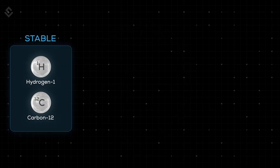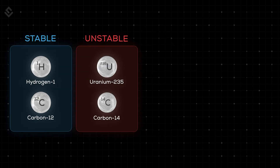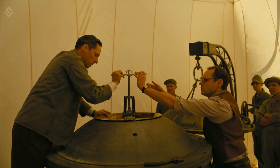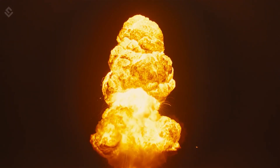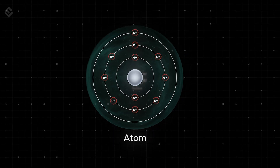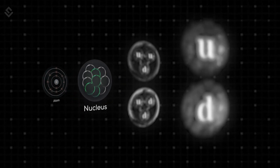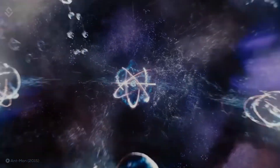We find some atoms are stable, while some are unstable. Some are charged, and some are neutral. What makes these atoms behave so differently? Why do some atoms produce fission reactions while some do not? Is there something going on inside an atom that makes them act accordingly? Let's jump into the quantum realm like Ant-Man and find out what's going on inside an atom. My name is Siddharth, and you're watching the World of Science.